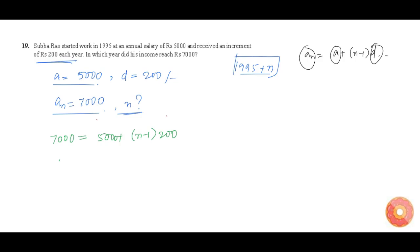2000 equals (N minus 1) times 200. N is equal to 11.